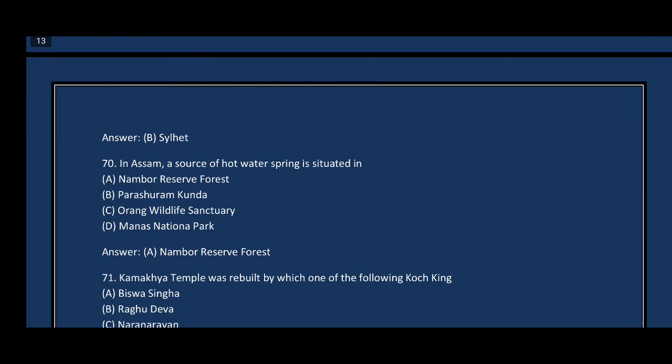Question number seventy: In Assam, a source of hot water spring is situated in — the correct answer is option E, Naranbari Reserved Forest.